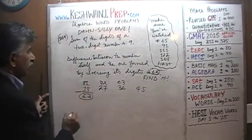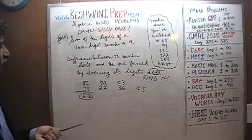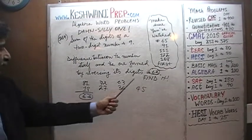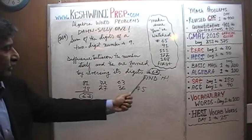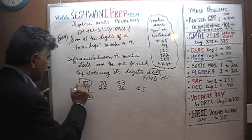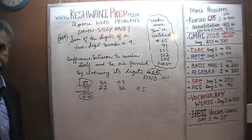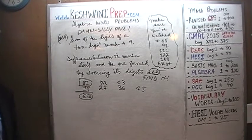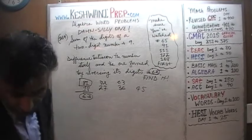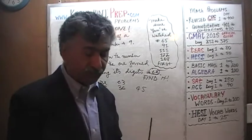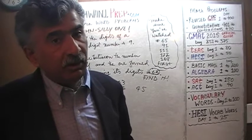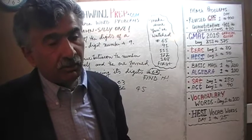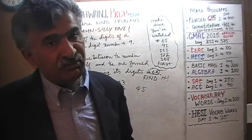There you go. Since we are told the difference between the number itself and the one formed by reversing the digits is sixty-three, the number must be eighty-one. Nobody in their right mind would solve this algebraically. It's a damn silly one — I realized it after I finished making it.